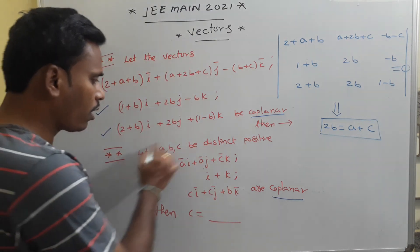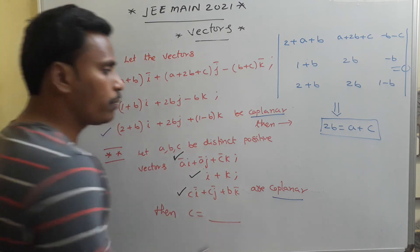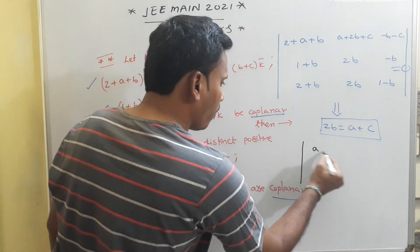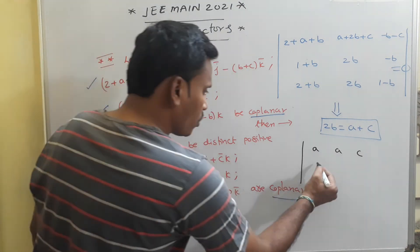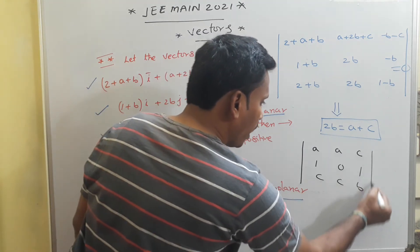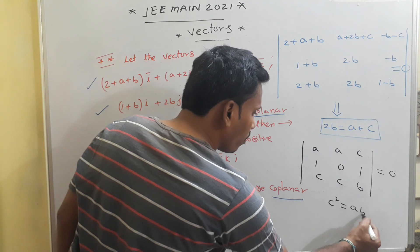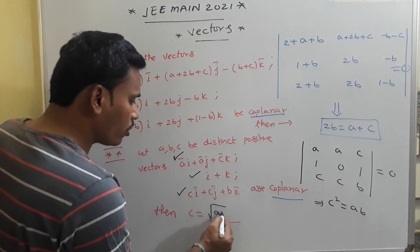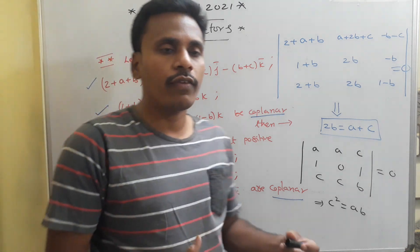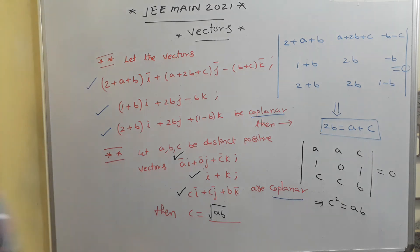In the second coplanarity problem, three vectors are ai + aj + ck, i + k, and ci + cj + dk. The determinant of coefficients — rows (a, a, c), (1, 0, 1), (c, c, b) — equals zero. Evaluating this gives c² = ab, so c = √(ab). Many problems from JEE Mains 2021 are related to coplanarity of vectors, making it an important topic.